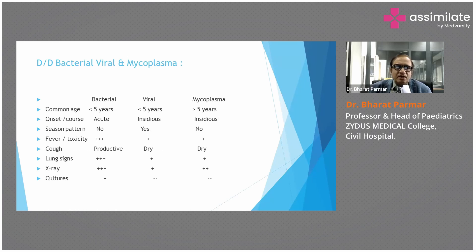In bacterial pneumonia: age less than five years, acute onset, high-grade temperature, toxemia, productive cough, lung signs present with crepitations, and lobar opacity on X-ray. In viral pneumonia: age less than five years, insidious onset, seasonal pattern more common in winter, fever less common, dry hacking cough, mild lung signs, interstitial opacity on chest X-ray in the perihilar region.